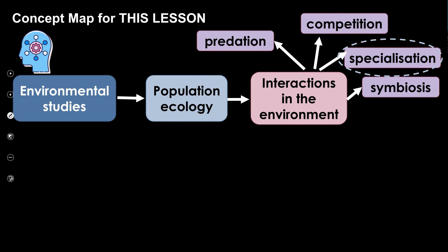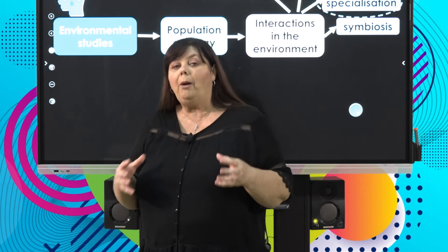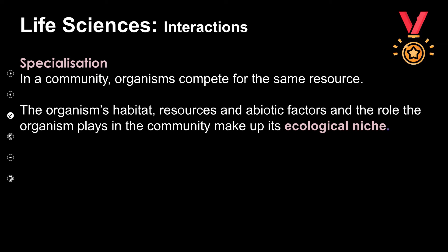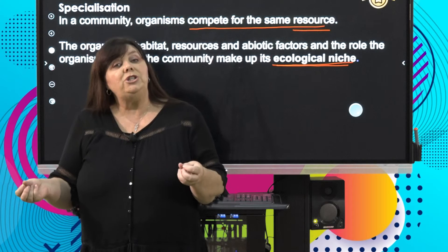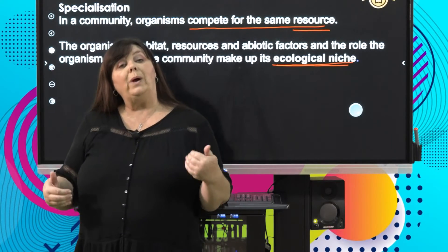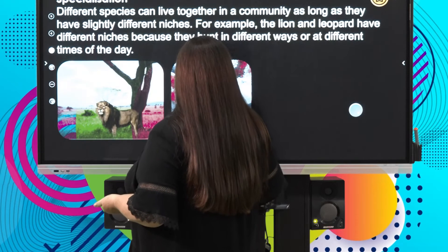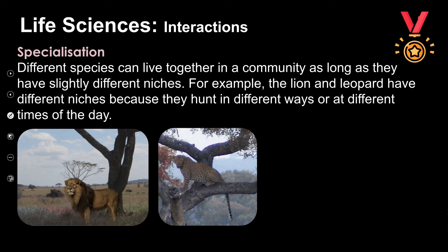Moving on to specialization. Specialization is very closely linked to competition. When we talk about specialization and competing for the same resource, we need to introduce a new term: ecological niche. A niche is the organism's habitat — where it lives — as well as the role that it plays in the environment. Different species can live together in a community as long as they have slightly different niches.